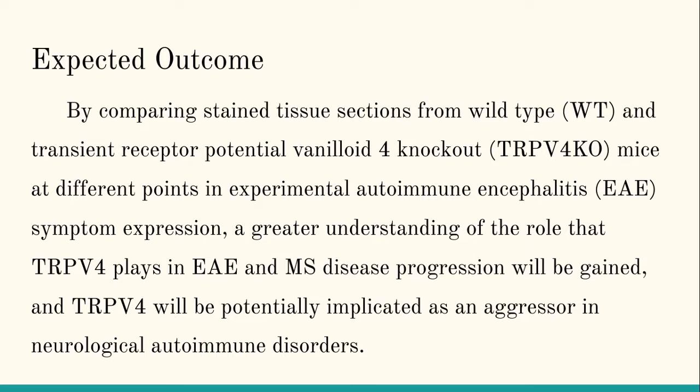Theoretically, by comparing stained tissue sections from both wild-type mice that have TRP-V4 and TRP-V4 knockout mice — so they don't have it — at different points in EAE symptom expression, a greater understanding of how TRP-V4 works in EAE and MS will be gained, and TRP-V4 could potentially be implicated as an aggressor in neurological autoimmune disorders.